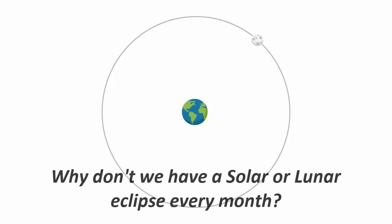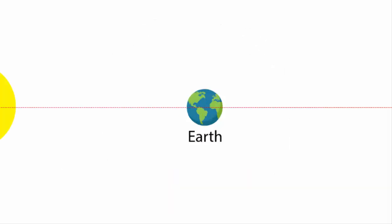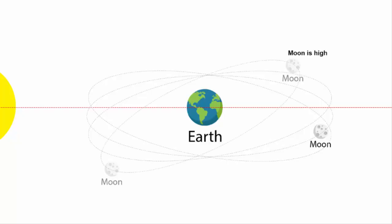One more important point to note is that any eclipse, be it a solar or a lunar eclipse, they do not happen every month. Because if you look at the orbital pattern of moon, it looks something like this. Basically, the moon's orbit wobbles. Its velocity varies and alters, which creates different angles during its rotation.